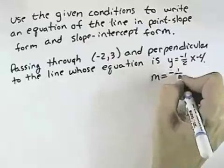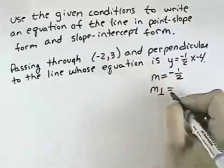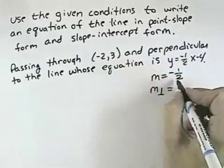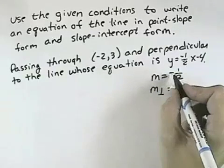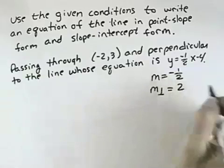Well, in this equation, the slope is the coefficient in front of x, which is -1/2. But we want the slope that's perpendicular to that. The perpendicular slope is the negative reciprocal, which means the opposite sign, which would be positive, and flip it over, which is 2. So the slope for our line is 2.